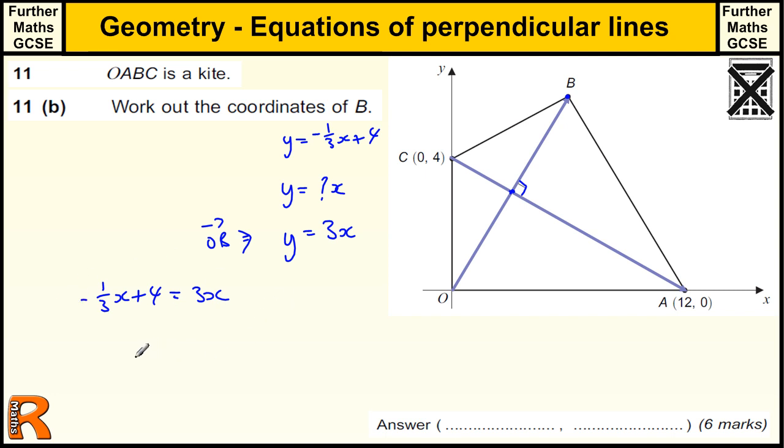Solving that by adding the one-third x gives us three and one-third x equals four. Three and one-third is ten-thirds x equals four. So x equals four divided by ten over three, which is the same as multiplying by three over ten, giving twelve tenths or six fifths. The x value here is six over five. This one is going to be double that, which is twelve over five.